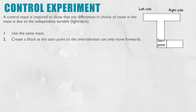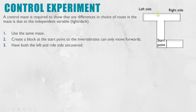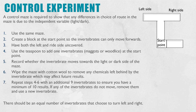You also have to set up a control experiment. The point of a control experiment is to show that any differences you see are just due to the independent variable. To prove it is just the light and dark causing any differences, use the same maze with the block in, but this time both sides are uncovered — so there's no dark option. The method is then exactly the same. We would expect an equal number going left and right, which proves it is the light and dark causing any differences seen in the test maze.